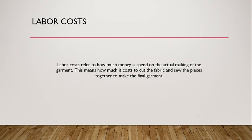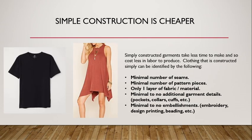Simple construction is cheaper. Very obviously, simple construction takes less time to make and so costs less in labor to produce. Clothing that is simply constructed can be identified by the following: it has a minimal number of seams, a minimal number of pattern pieces, and typically only one layer of fabric or materials. It also has minimal to no additional garment details.